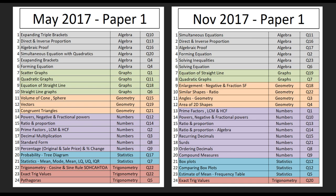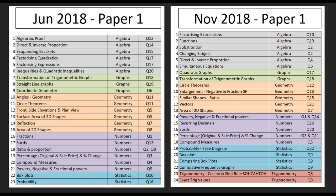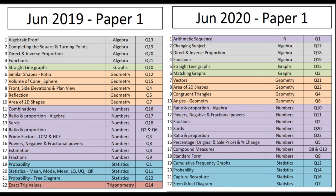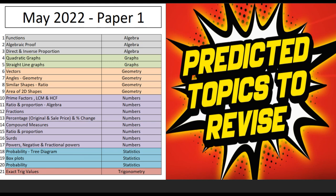Now we are going to show the 2018 summer and resit papers with their topics listed. This is the 2019 and 2020 papers as well. There were no exams in 2021 due to COVID. Based on this analysis, we have identified the most frequent topics.